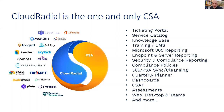CloudRadial is what we term a CSA — a client services automation platform. Our job is to work tightly with your PSA, like ConnectWise, Autotask, BMS, Syncro, or Halo, to basically bring a variety of different pieces together for the benefit of your clients and for the benefit of your account management service team and others inside your organization.